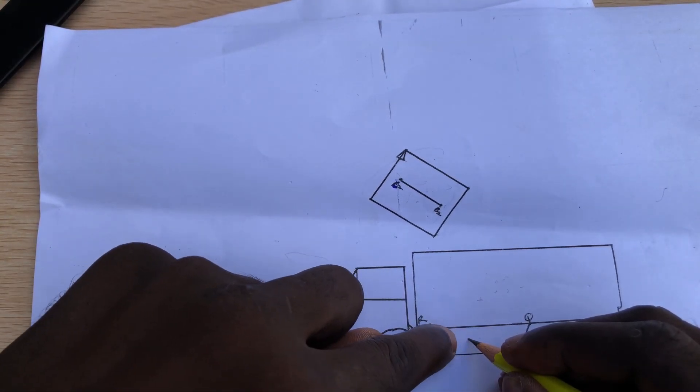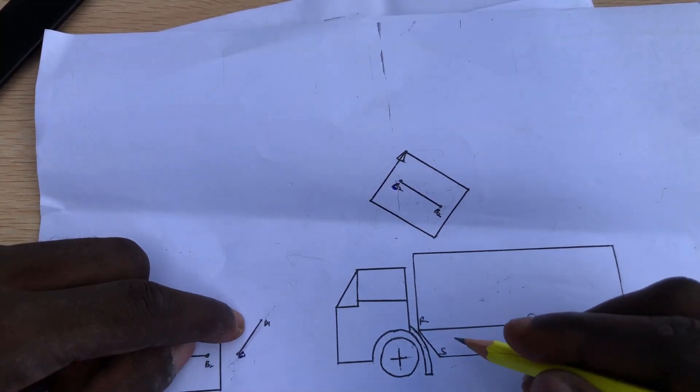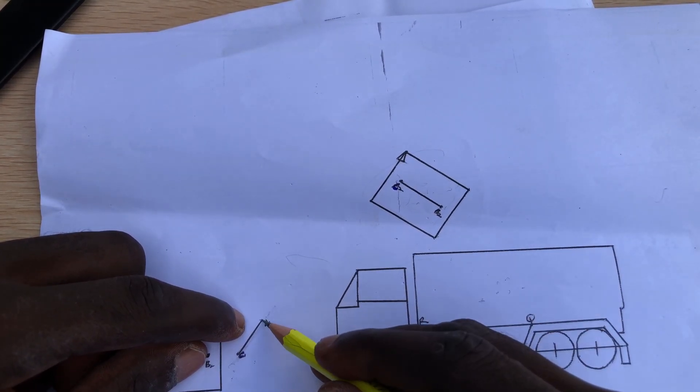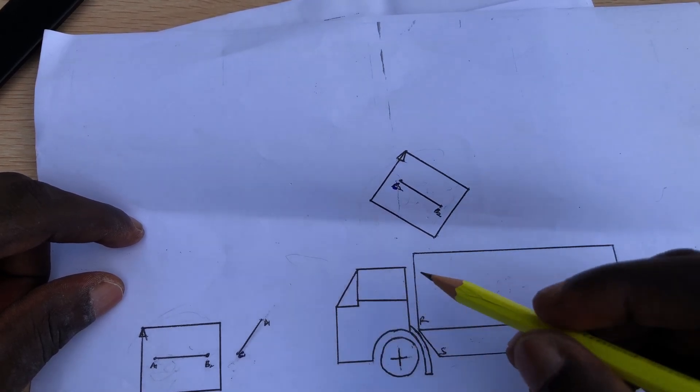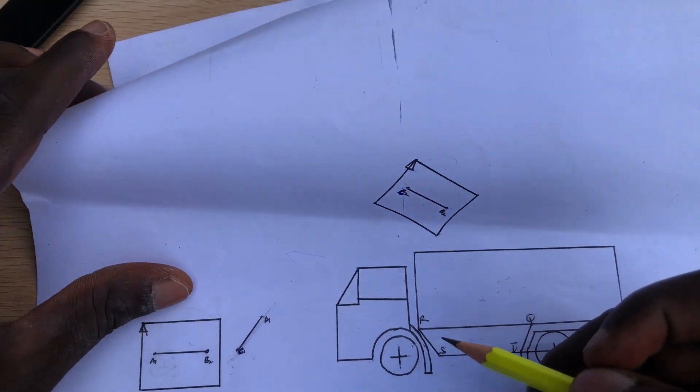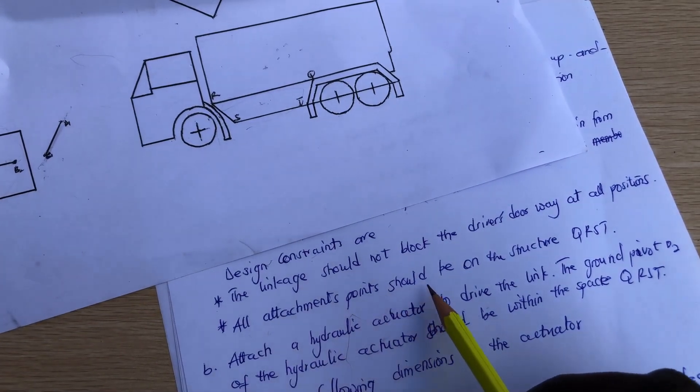In the case of your design, if it's joining from here to the movable point here or point D, you're going to block the driver's doorway. So we need to find a way to eliminate that. The next is: all attachment points should be on the structure QRST.